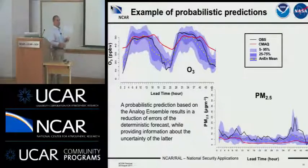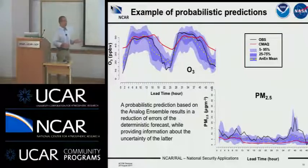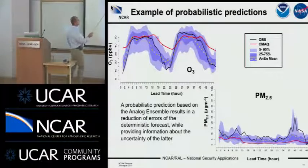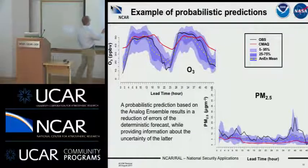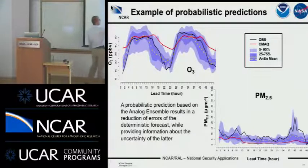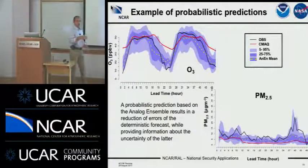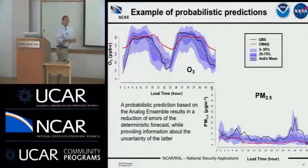Here's an example of the probabilistic prediction from the analog ensemble at two locations. For ozone, you see the observation in black, the CMAQ model used to generate the analog ensemble in red, and then the analog ensemble distribution of different quantiles along with the analog ensemble mean shown as a dashed yellow line. The analog ensemble is accomplishing what we promised NASA — reducing the error of the model. For example, the overnight overestimation of the model is corrected by the analog ensemble mean, which gets much closer to the observed value. It also provides uncertainty quantification which, as I'll show in a couple of slides, we can objectively verify is a reliable estimate of the uncertainties.